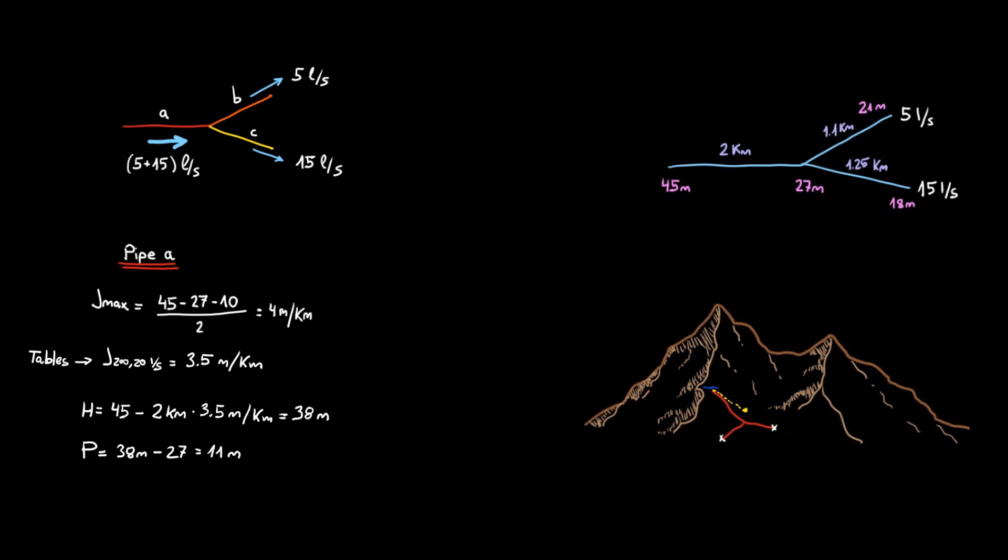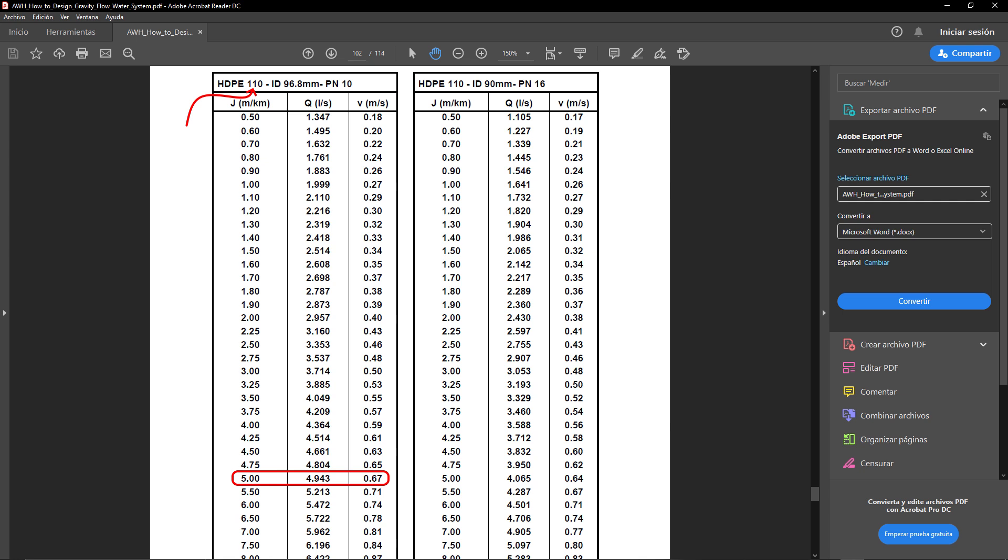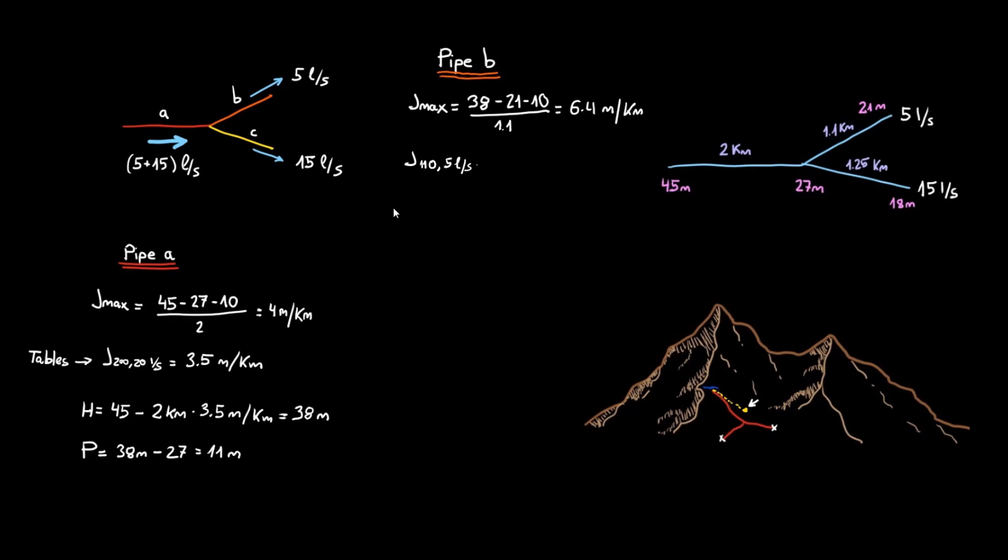We repeat this process for the other two pipes. The starting point is now 38 meters, the head we calculated at the fork. We need head loss values below 6.4 meters per kilometer. This time, the flow to enter in the charts is 5 liters per second. A 110 millimeter pipe gives 5 meters per kilometer. The head at the end point is the head at the start minus the losses. The pressure is above 10 meters, which is enough for ground level use.